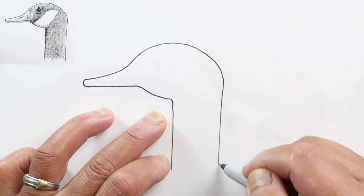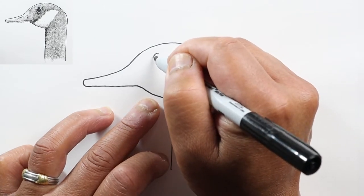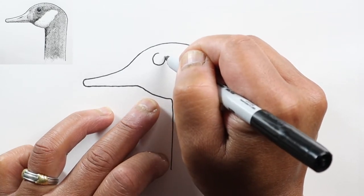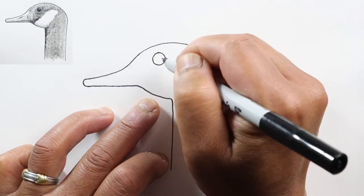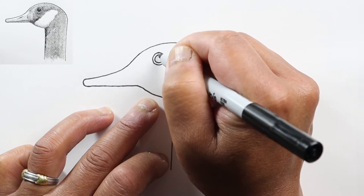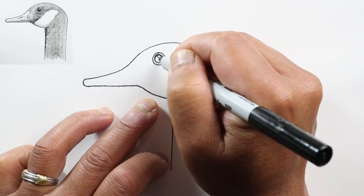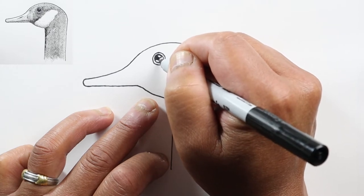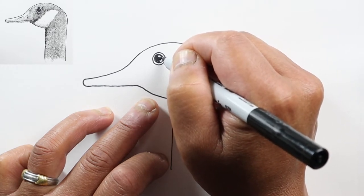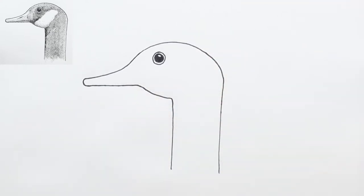The back will continue the curve and start curving down for its neck. Right above the cheek will be the eye, and we'll just draw a circle and another circle, and give it a reflection right there in the upper right.